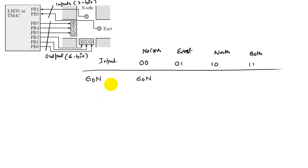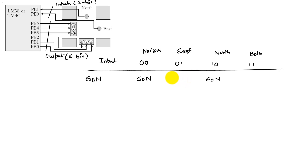On the other hand, if I have input saying there is contending traffic in the north direction — meaning I've already given north traffic a go and there is a car in the north direction — I continue the state as go north. Now if there is traffic in the east direction, since I've already given priority to north traffic, I should yield and give control to east traffic by going through a wait state — I'll wait the north traffic for a bit, flash a yellow light, and then eventually transition to the other state.